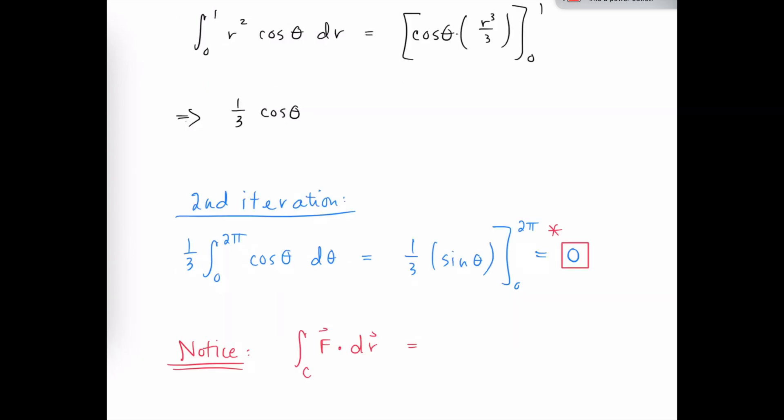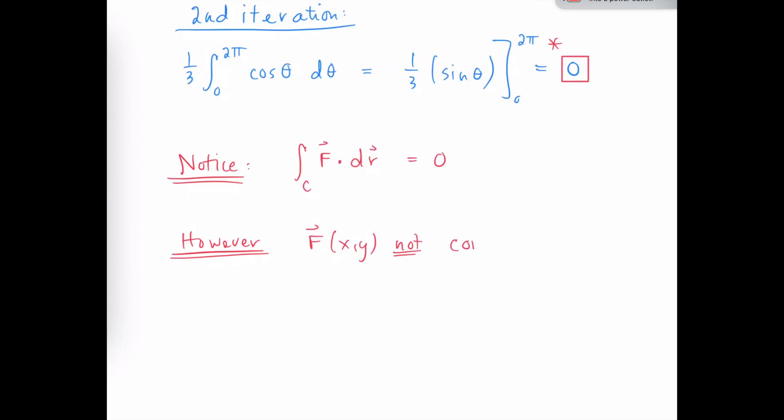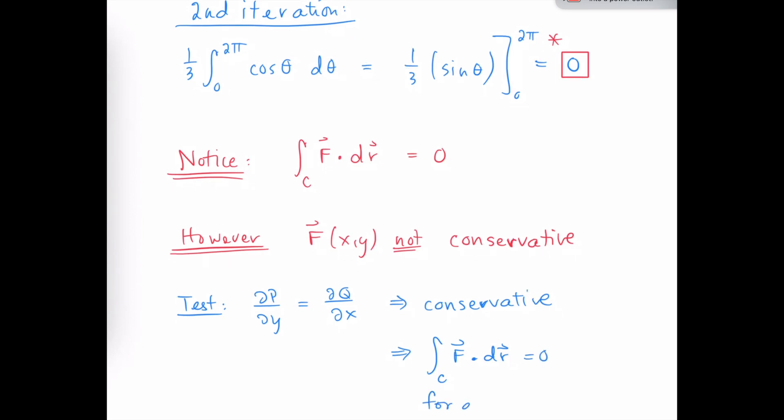So to summarize, this line integral did turn out to be 0. However, the vector field was not conservative. Remember, the test for determining whether or not a vector function is conservative is to look at the first partial of P with respect to y, and see whether or not that's equal to the first partial of Q with respect to x. And if this is true, then we would say yes, the vector field is conservative, and we can guarantee that F dot dr will be 0 for all paths C.